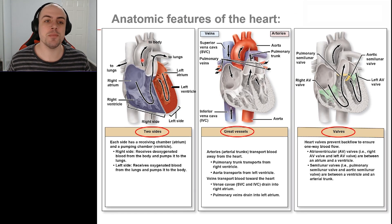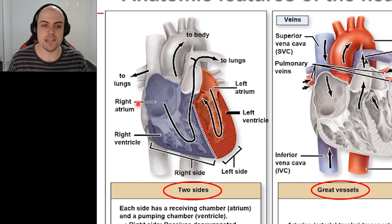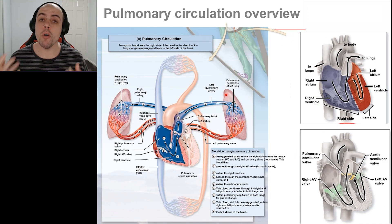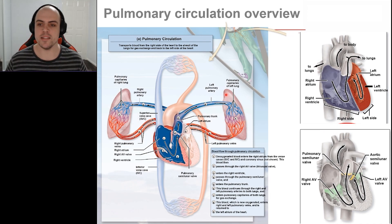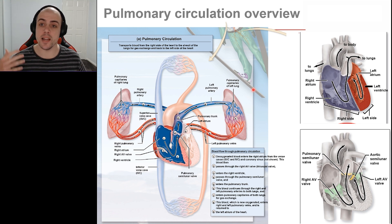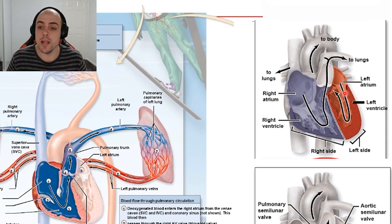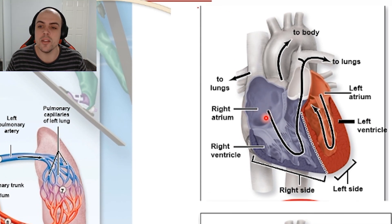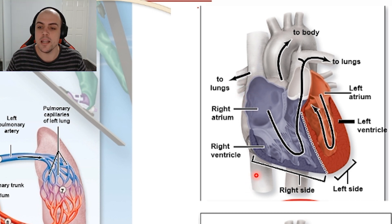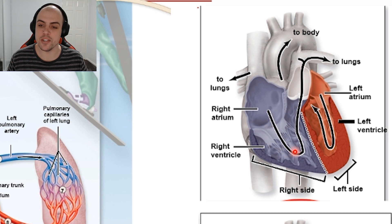I've shown this diagram a few times, but what we're going to be doing here is focusing very much on the right-hand side of the heart. The pulmonary circuit begins at the right-hand side. This is filled with deoxygenated blood that has just finished its full circuit around the body. This deoxygenated blood is going to enter the right atria from the superior and inferior vena cava, and the blood is then going to be pushed from the atria down into the ventricle.